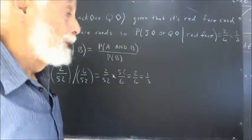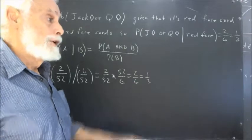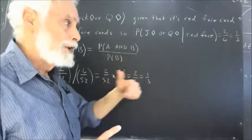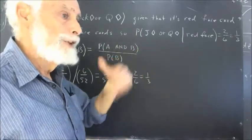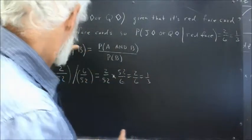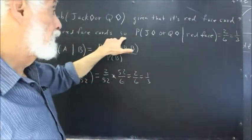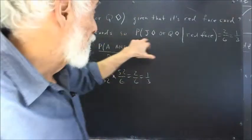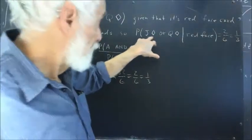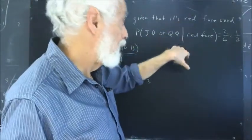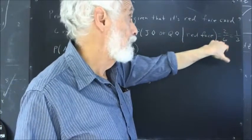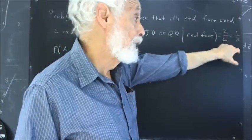If you think about it a minute, you know that there are only six red face cards: the Jack, Queen, King of Diamonds, and the Jack, Queen, King of Hearts. So there are only six red face cards. It follows that the probability of the Jack of Diamonds or Queen of Diamonds, given that it's a red face card, is two out of six, or one-third.